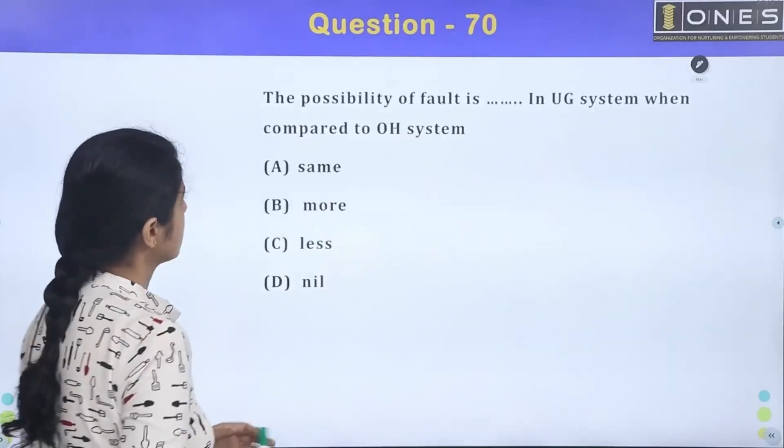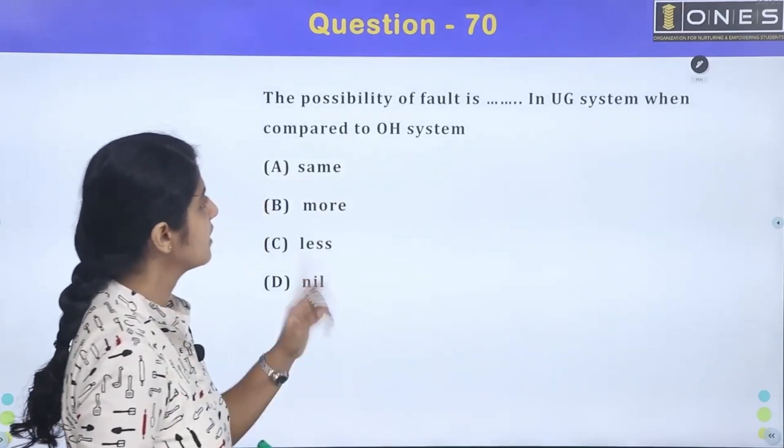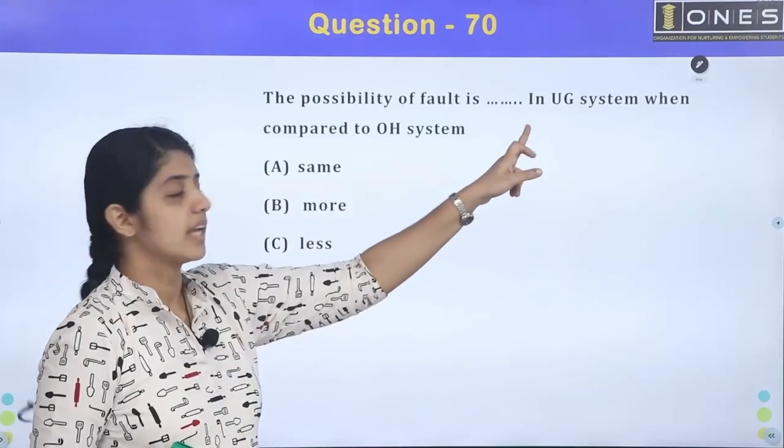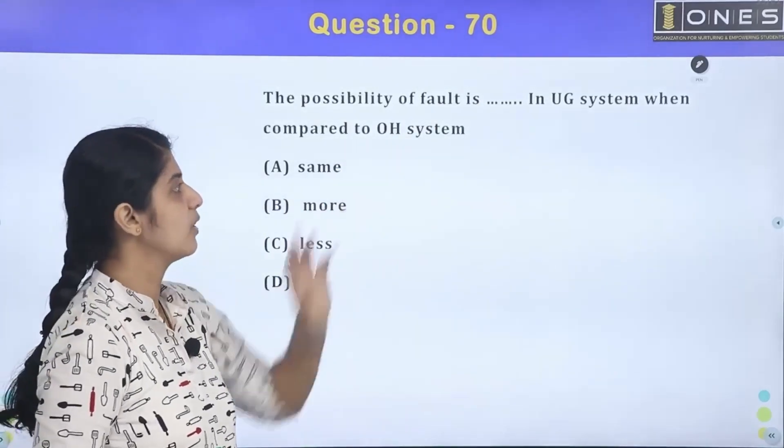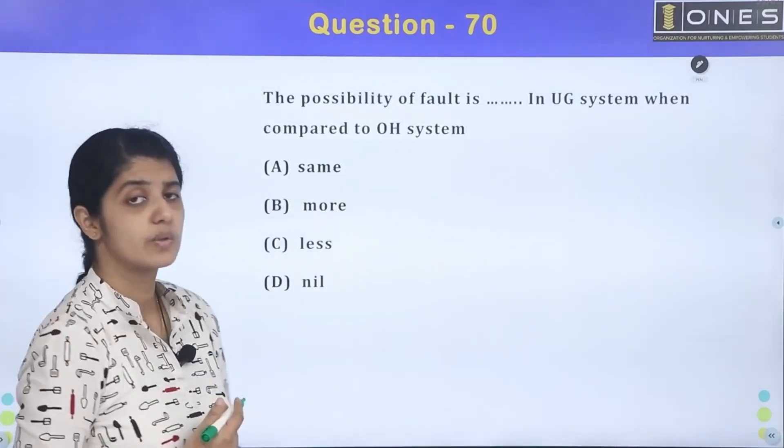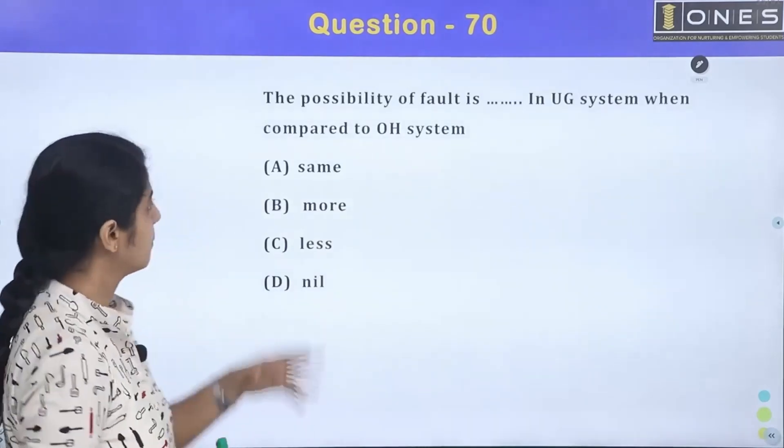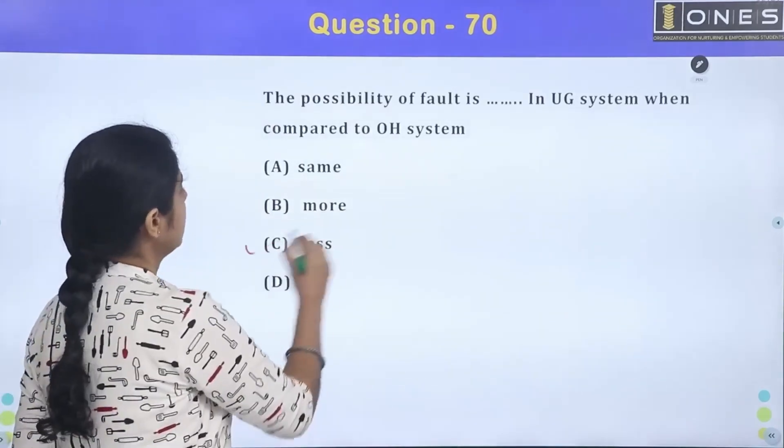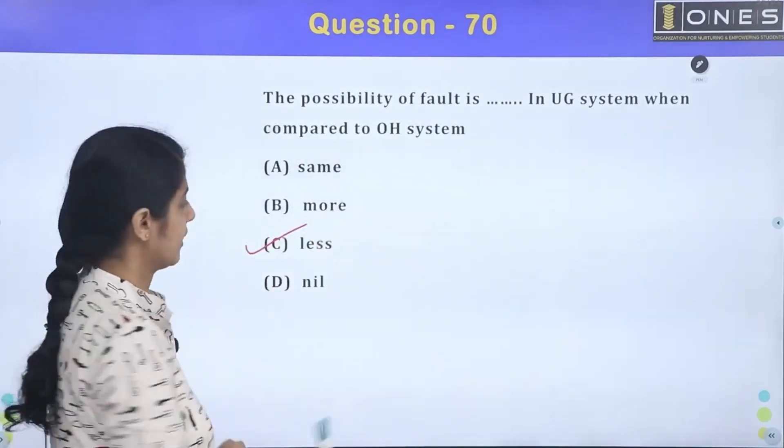The possibility of a fault is blank in UG system when compared to OH system. Underground cable system and overhead line system - this is UG system and OH system. What is the chance of a fault? The possibility of a fault is less in the UG system when compared to OH system.